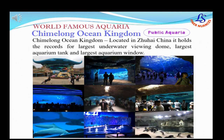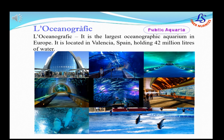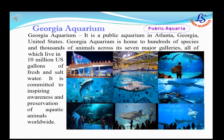Here is a list of world famous aquaria. The first is Chimelong Ocean Kingdom located in Zhuhai, China, which holds the record for the largest underwater viewing dome, largest aquarium tank, and largest aquarium window. Another popular one is Marine Life Park Aquaria located in Sentosa, southern Singapore, with more than 100,000 marine animals. L'Oceanogràfic is the largest aquarium in Europe, located in Valencia, Spain, holding 42 million litres of water. Georgia Aquarium is located in Atlanta, Georgia, USA, and holds hundreds of species and thousands of animals across its seven major galleries.